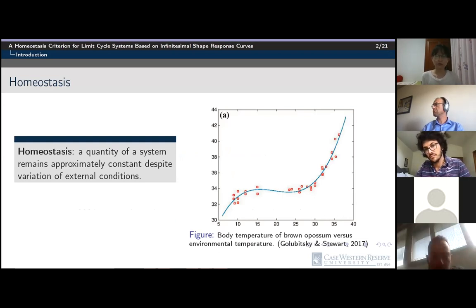Examples include the stabilization of body temperature against changes in external temperature, as well as the maintenance of metabolite concentration in the face of fluctuating metabolic demands. A species of opossum shows body temperature versus environmental temperature. The body temperature changes almost linearly when the external temperature is either small or large, while in between is a broad flat region where homeostasis occurs. This general shape is called a chair, which I will mention later.